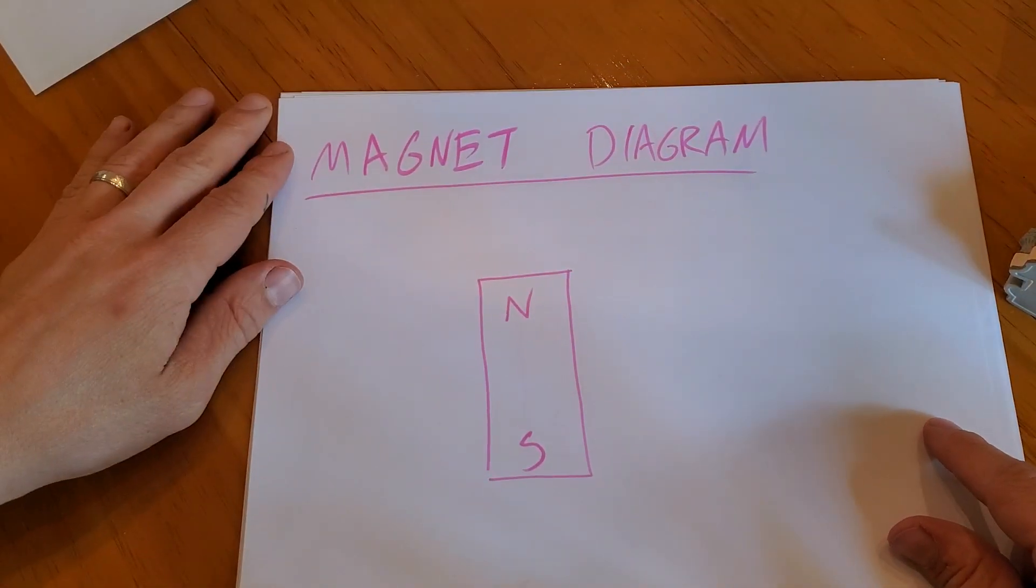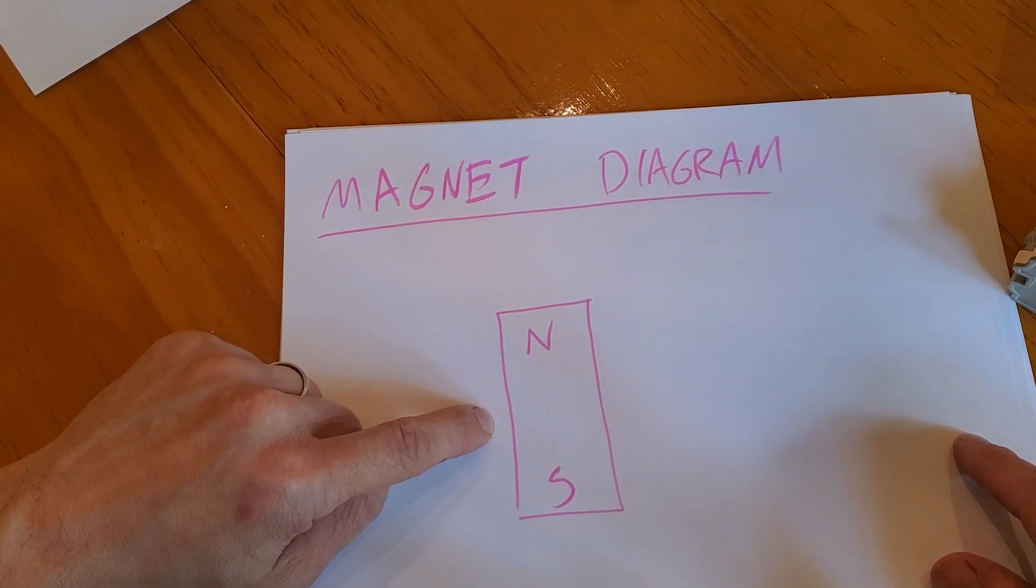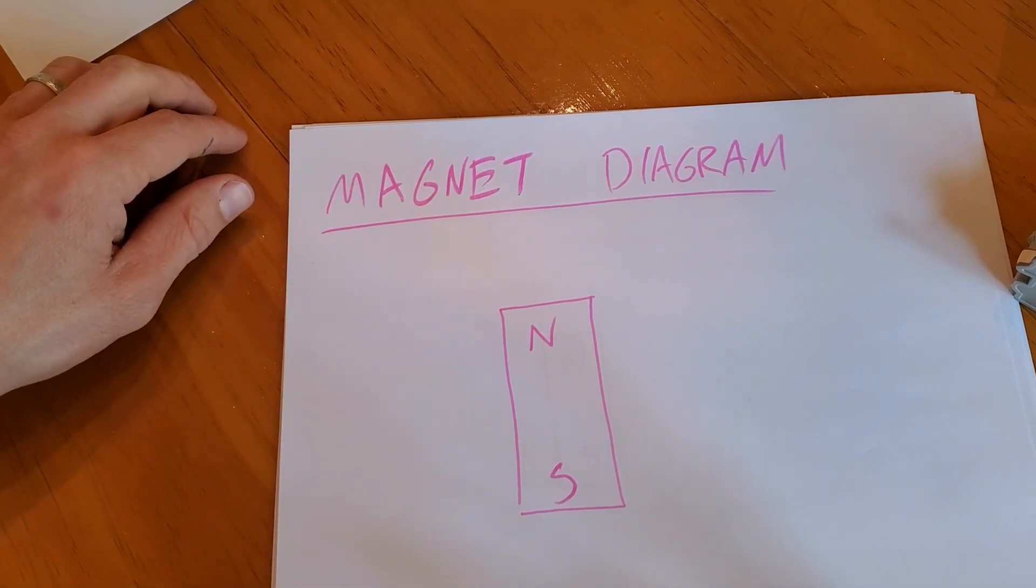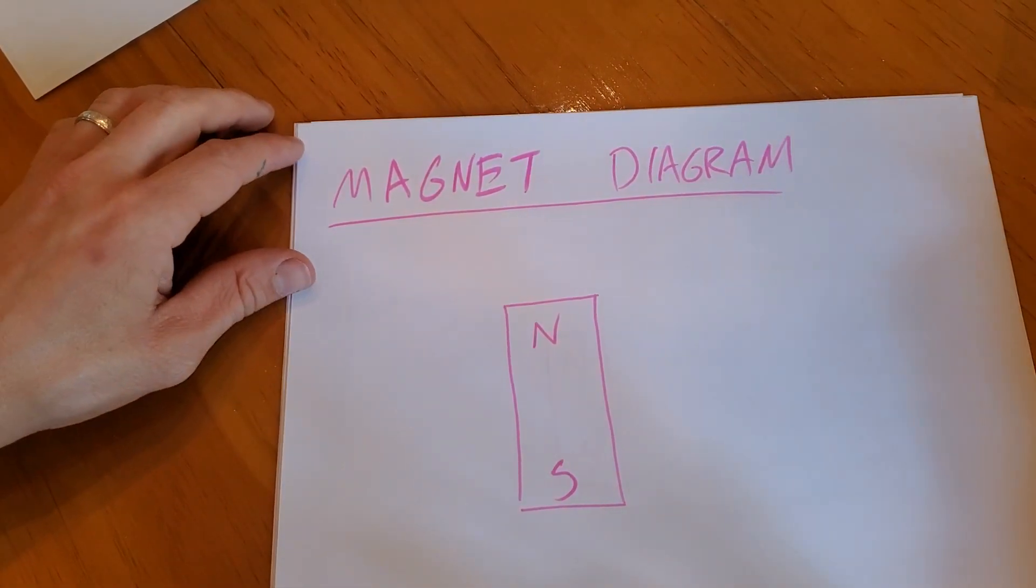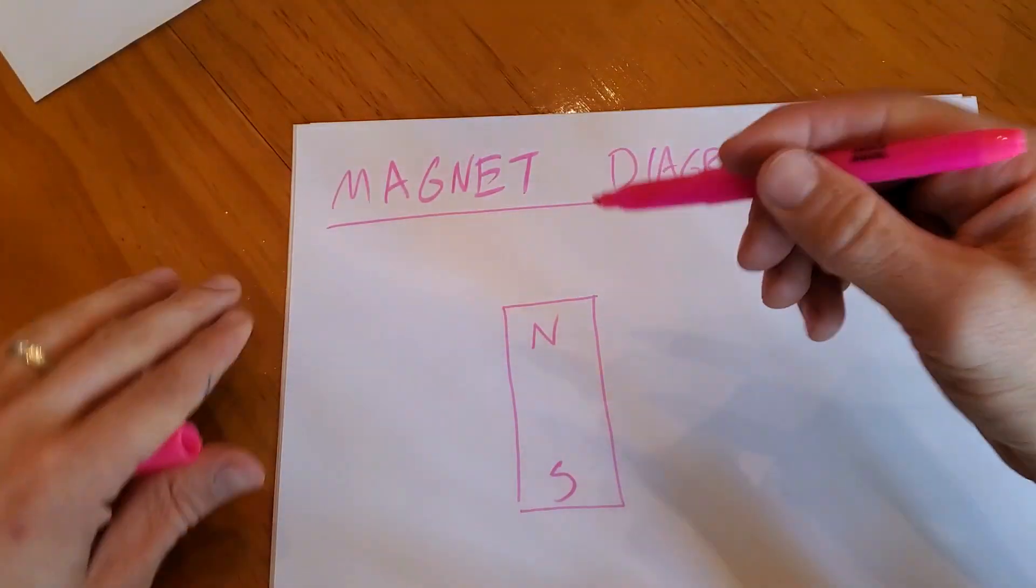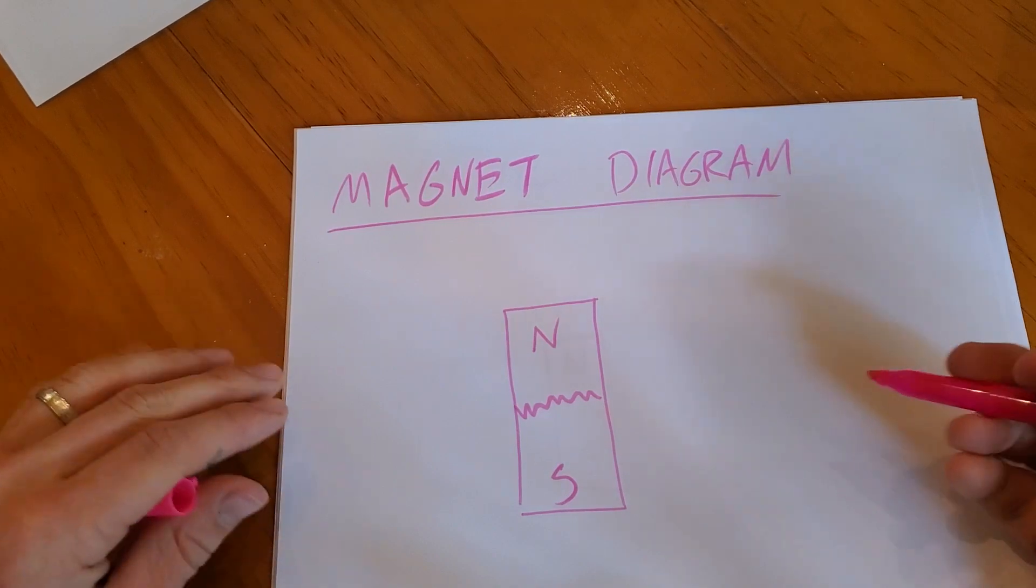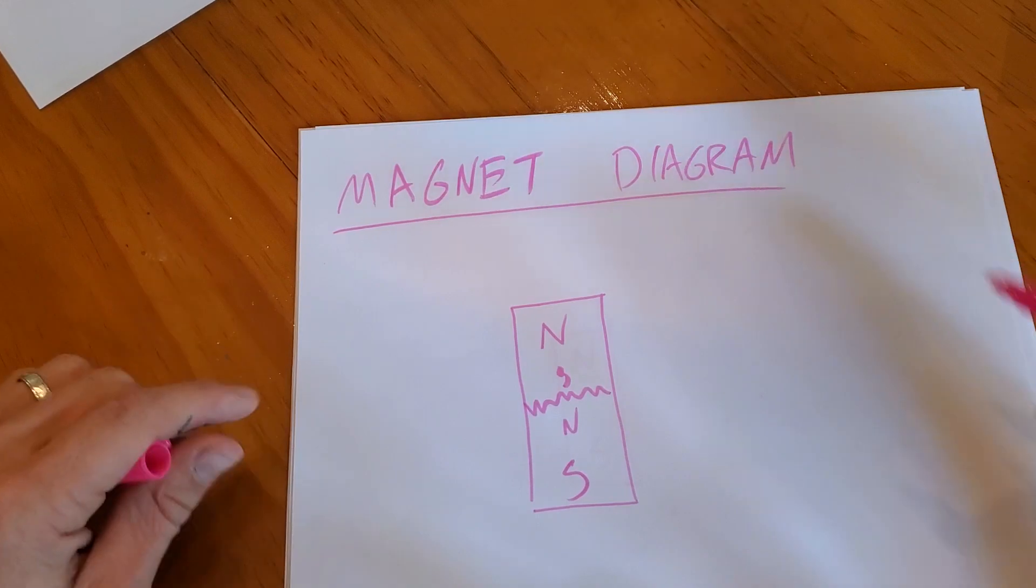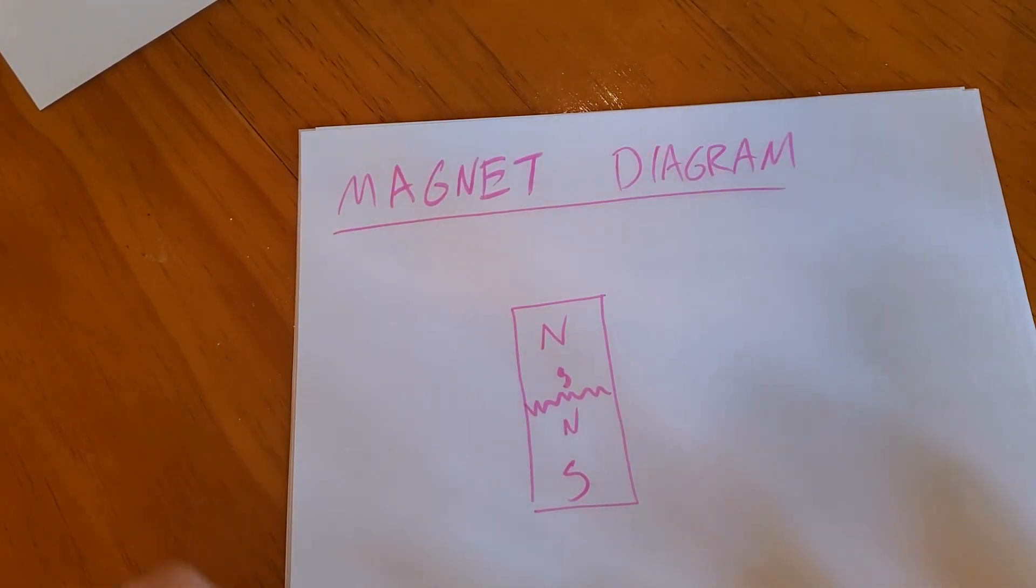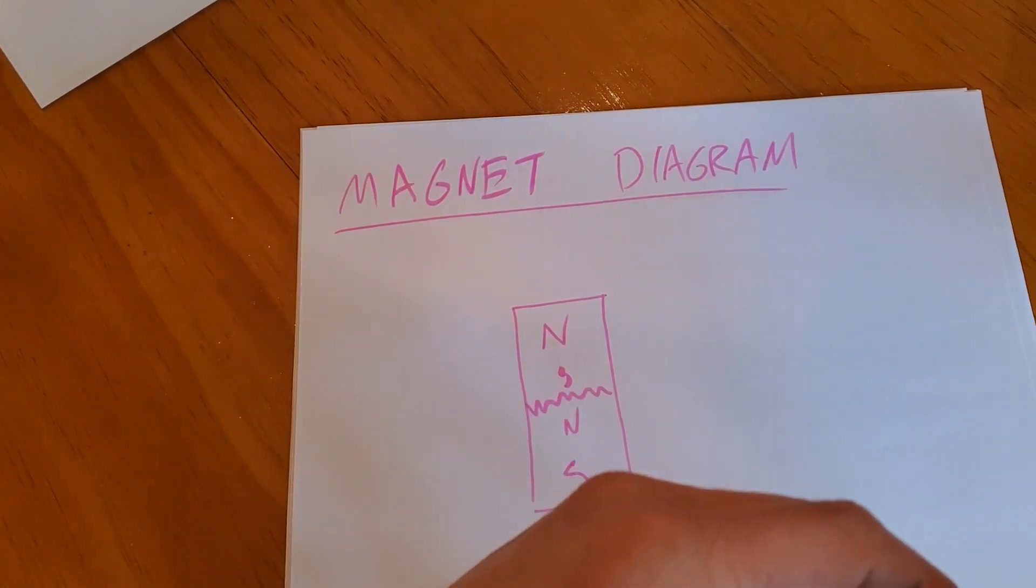Here's your basic magnet, like a bar magnet you probably played around with in elementary school. Every magnet has a north pole and a south pole. Every single magnet has to have a north pole and south pole. But Mr. Waller, what happens if you were to cut this magnet in half? Well, guess what? Now you get two magnets. And this north now has a south right here. And this south now has a north right there. If you were to split them again, you'd get four magnets and so on.